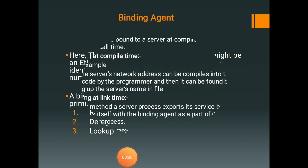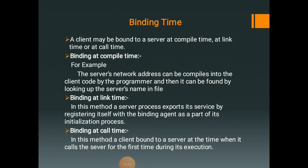The next process is binding time. A client may be bound to a server at compile time, at link time, or at call time. In binding at compile time, the client and server modules are programmed as if they were intended to be linked together. The server's network address can be compiled into client code by the programmer and then found by looking up the server's name in a file. This method is extremely inflexible in the sense that if the server moves, is replicated, or the interface changes, all client programs using the server will have to be found and recompiled.